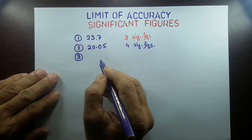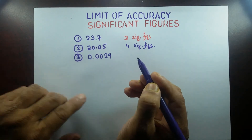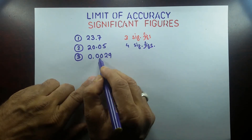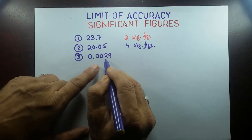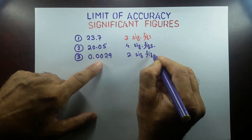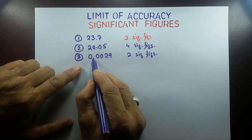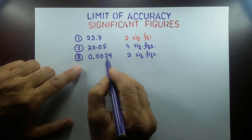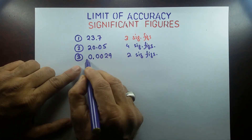Now let's do another one. If I have 0.0029, the zeros that appear before the non-zero digits are non-significant. So this is actually two significant figures. Most of you probably started counting from the decimal point and got four significant figures, but that's not correct. Whatever zeros appear in front of the first non-zero digit, they are all non-significant.